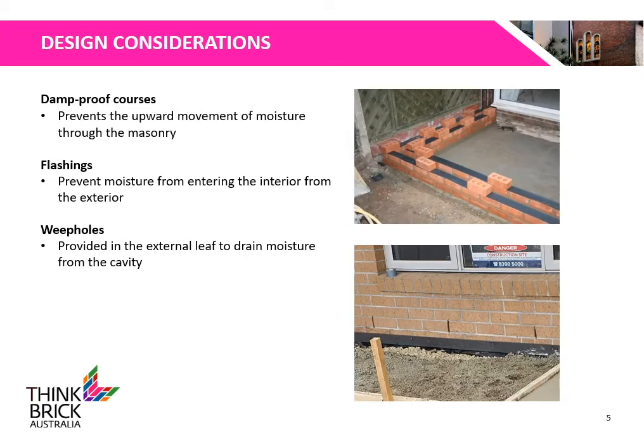Other design considerations include built-in components such as damp proof courses, flashings and weep holes. Damp proof courses prevent the upward movement of moisture through the masonry. Flashings prevent moisture from entering the interior from the exterior. Weep holes are provided in the exterior leaf to drain moisture from the cavity.